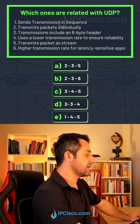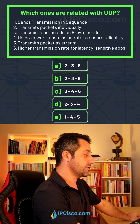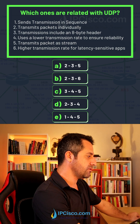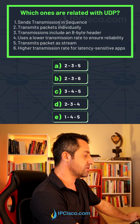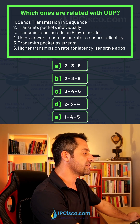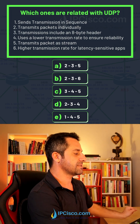Transmits packets individually. Transmission includes an 8-byte header. Uses lower transmission rate to ensure reliability. Transmits packets at stream. Higher transmission rate for latency-sensitive applications.